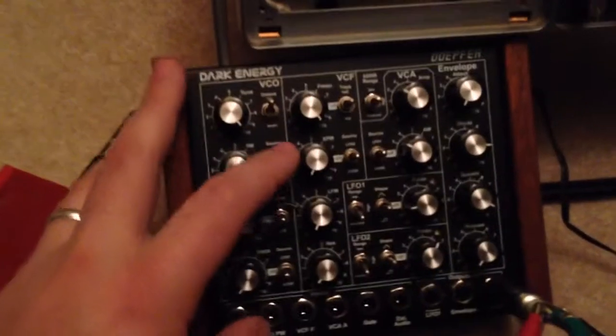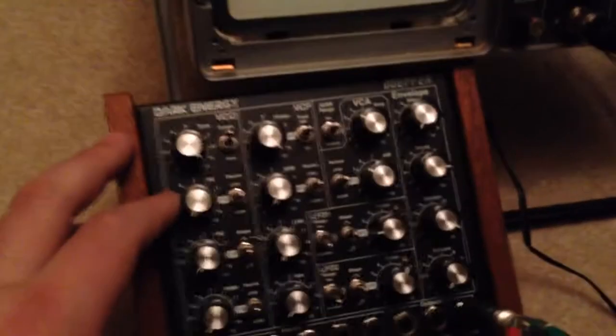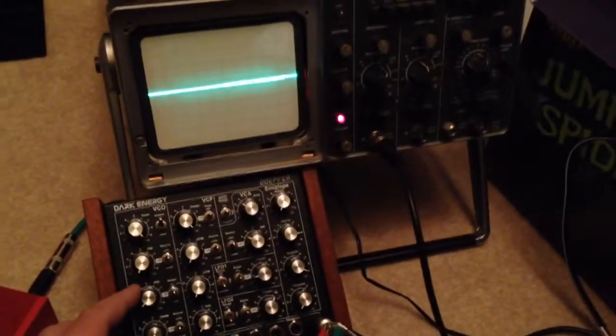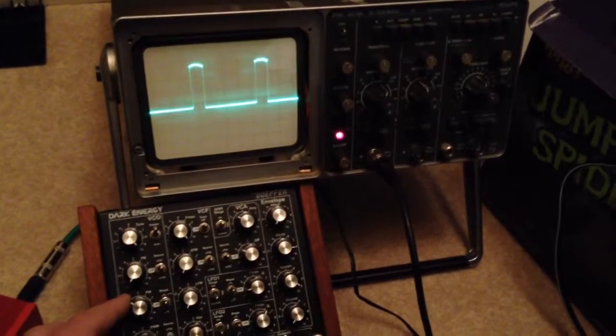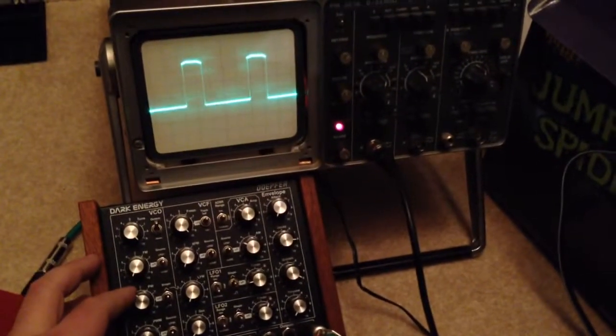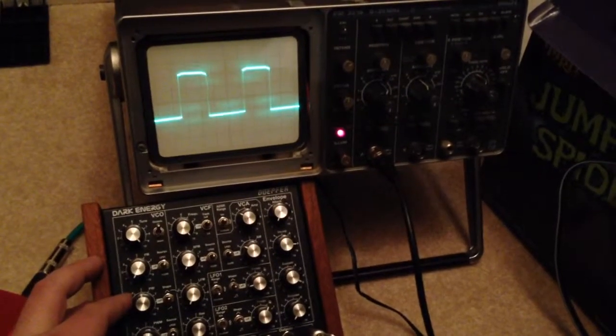Let's turn up. Right now you can see I have it kind of initialized here with nothing really on. I have the VCO octave way up so that it doesn't cause flickering on the screen. And the pulse width is 0, and I'm going to start to turn up the pulse width. So that's at 5.